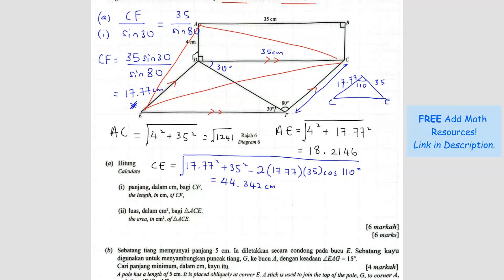All right, now we can, now that we have all 3 lengths, we can find the S value. S value equals to all 3 plus together, square root 1241 plus 18.2146 plus 44.342 divided by 2. You will get 48.8922. So this represents the S value.